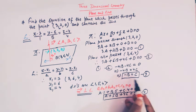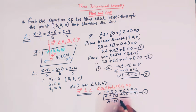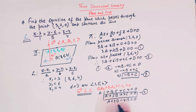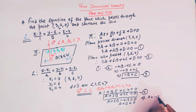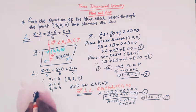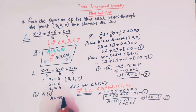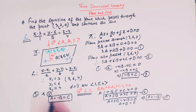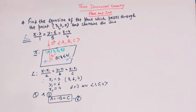Solving equations 3 and 4: from equation 3, C = minus B. Substituting into equation 4: A + 5B + 4(minus B) = 0, so A + 5B minus 4B = 0, giving A + B = 0, and therefore A = minus B. Combining equations 3 and 5, we arrive at the relation A = minus B = C.